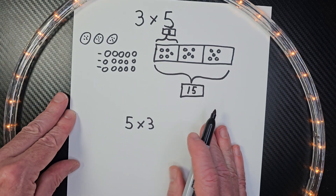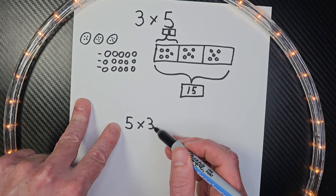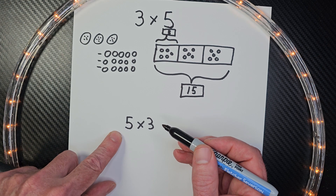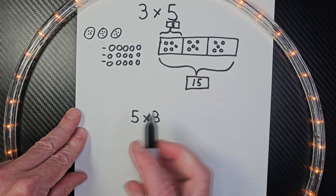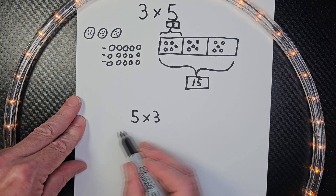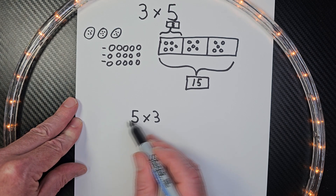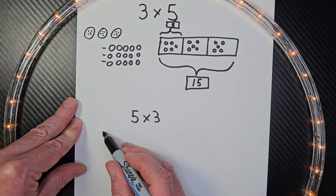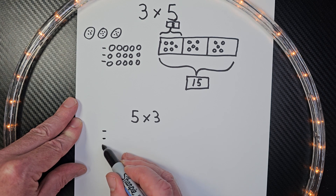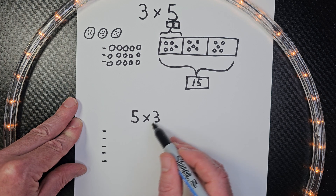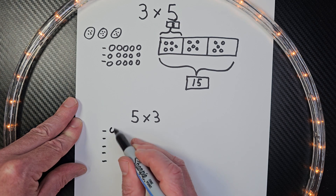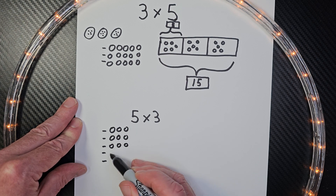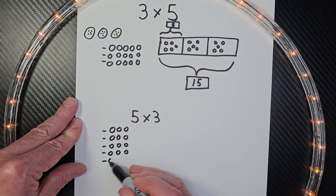Let's go ahead and do one more. You'll notice that I have five times three now — I just switched the numbers over. So I'm going to do just an array to show this visually. How many groups? Five groups. I'm going to put five lines — one, two, three, four, five. And in each group there are three — one, two, three — repeated for each of the five groups.